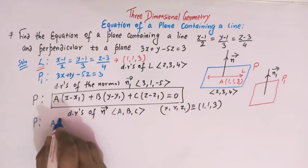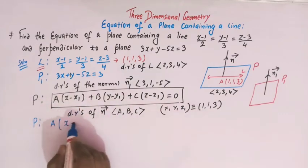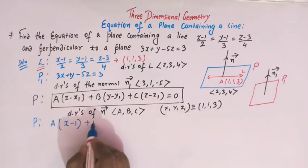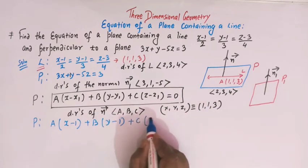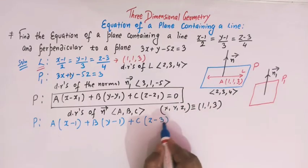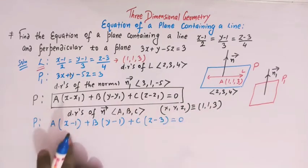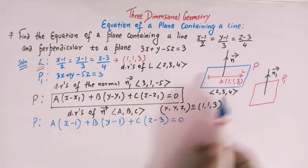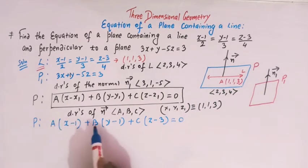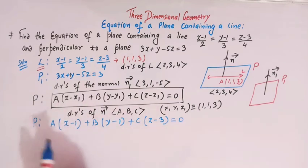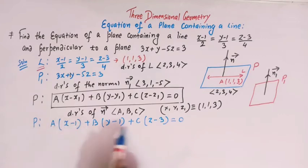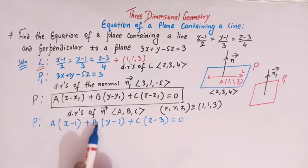Substituting the values of x1, y1, z1 into the equation, the equation of plane P becomes: a(x minus 1) plus b(y minus 1) plus c(z minus 3) equal to 0. Once we get the values of a, b, c we can substitute here and easily get the equation of plane P. Let us now frame equations in a, b, c to find their values.